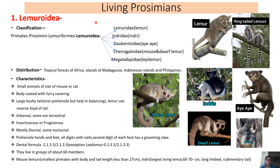Living prosimians. The first superfamily is Lemuroidea, which has five families: Lemuridae, Indriidae, Daubentoniidae, Cheirogaleidae, and Megaladapidae. The Lemuridae family includes lemurs, Indriidae includes indris, Daubentoniidae includes the aye-aye, and Cheirogaleidae includes mouse and dwarf lemurs. The smallest lemur is the mouse lemur, which is also the smallest primate. In Megaladapidae is the sportive lemur.